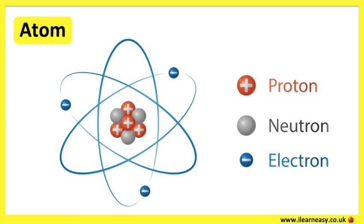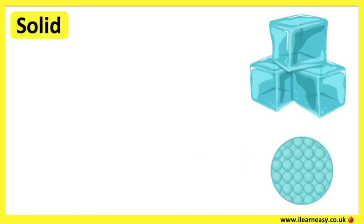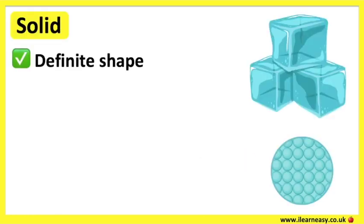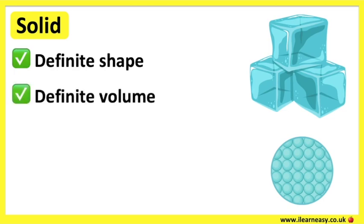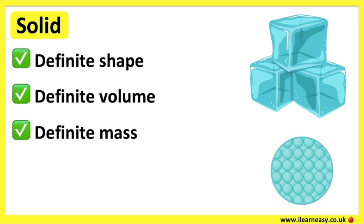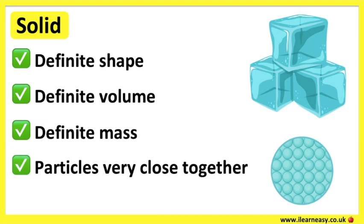Solids, liquids, and gases are types of matter. The particles in each are arranged differently. Solids have a definite shape, definite volume, and definite mass. This is because the particles in a solid are packed very closely together in a regular pattern, so the particles in a solid have very low kinetic energy.